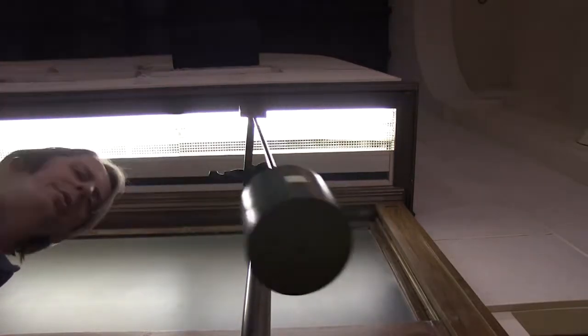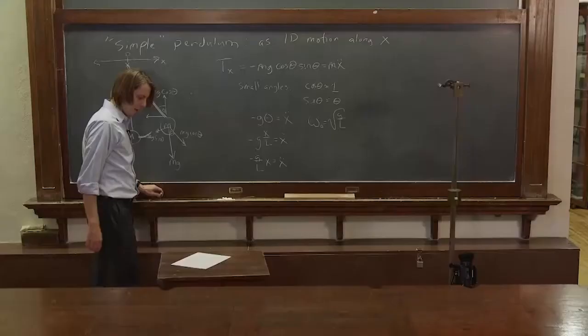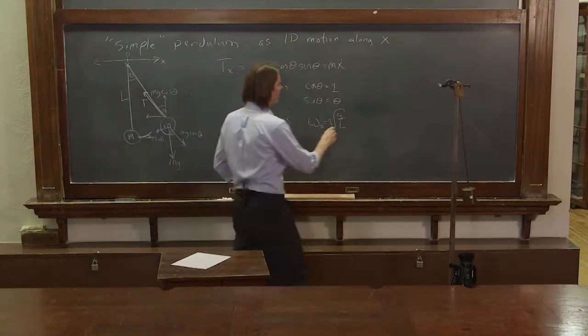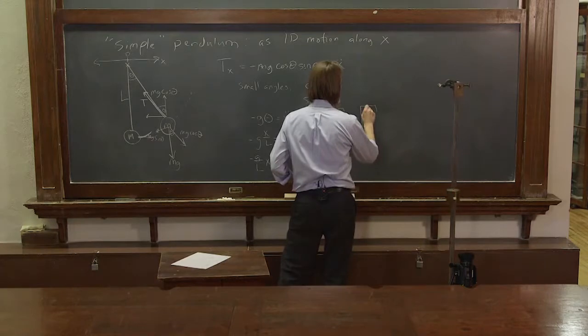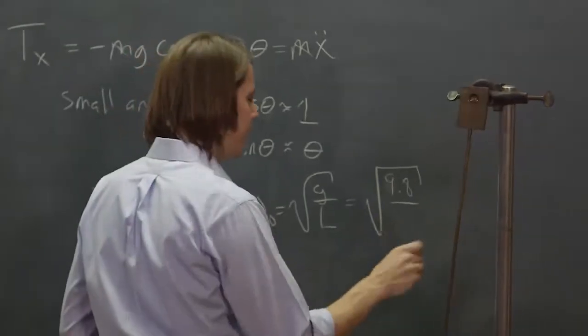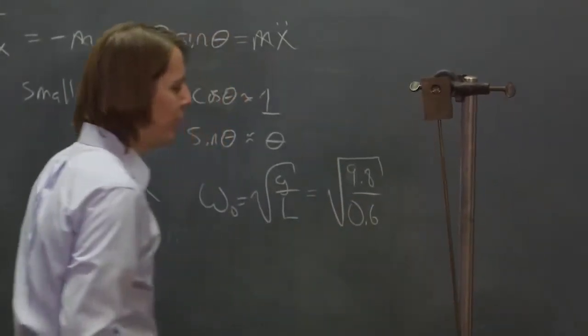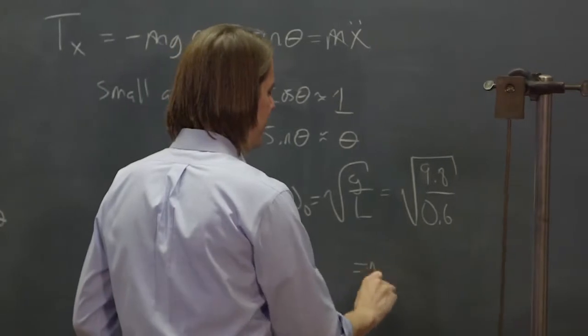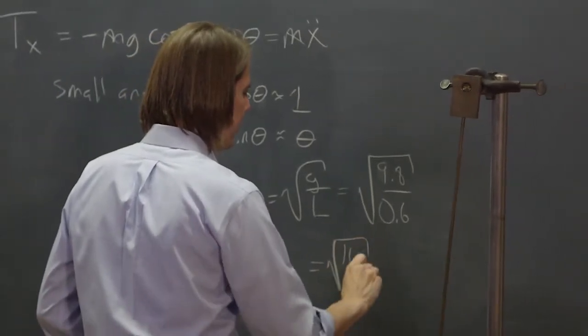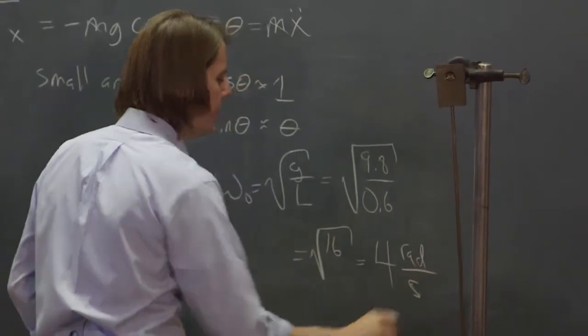So here is the 201x pendulum. And if we wanted to get omega naught as g over l, that's the square root of 9.8. And that distance, or the length of that from the pivot point to the center mass is about 0.6 meters. So that's about the square root of 16, which is about 4 radians per second.